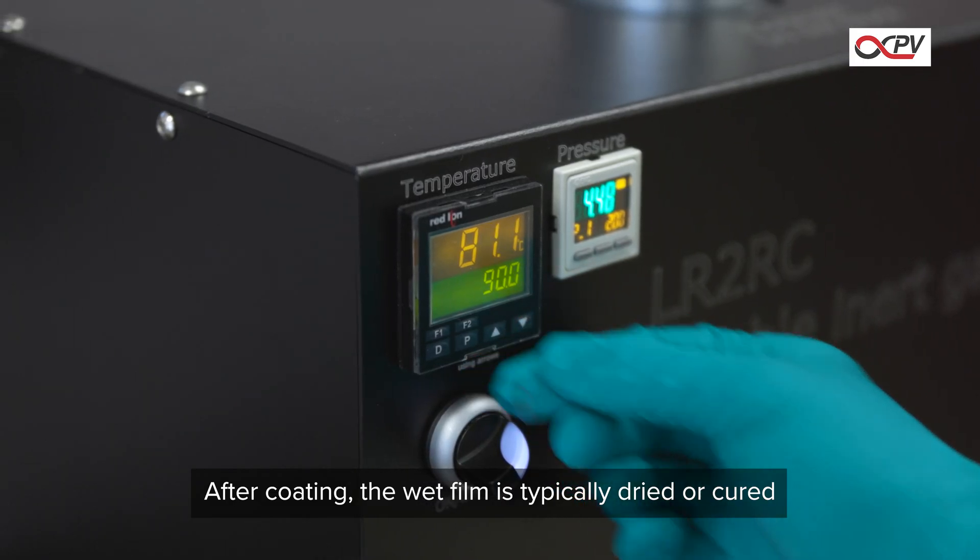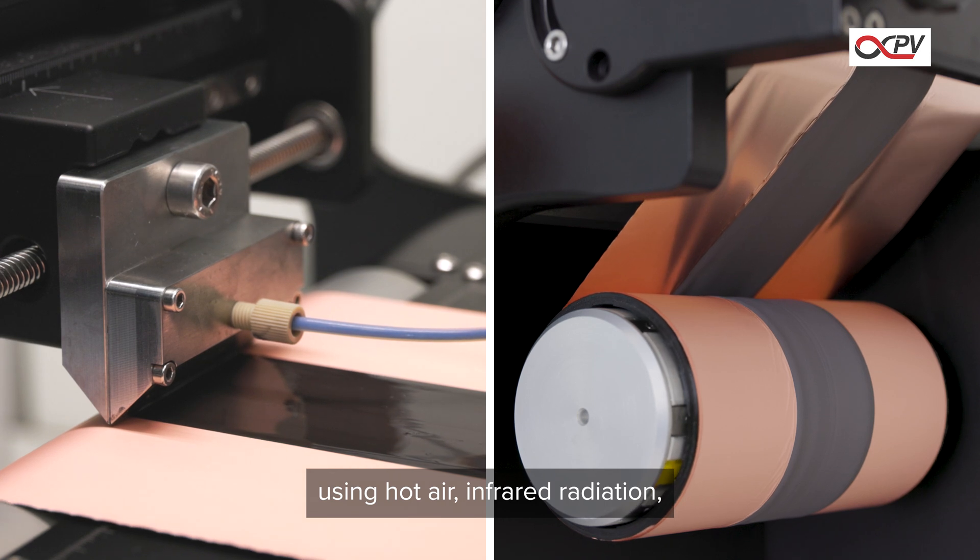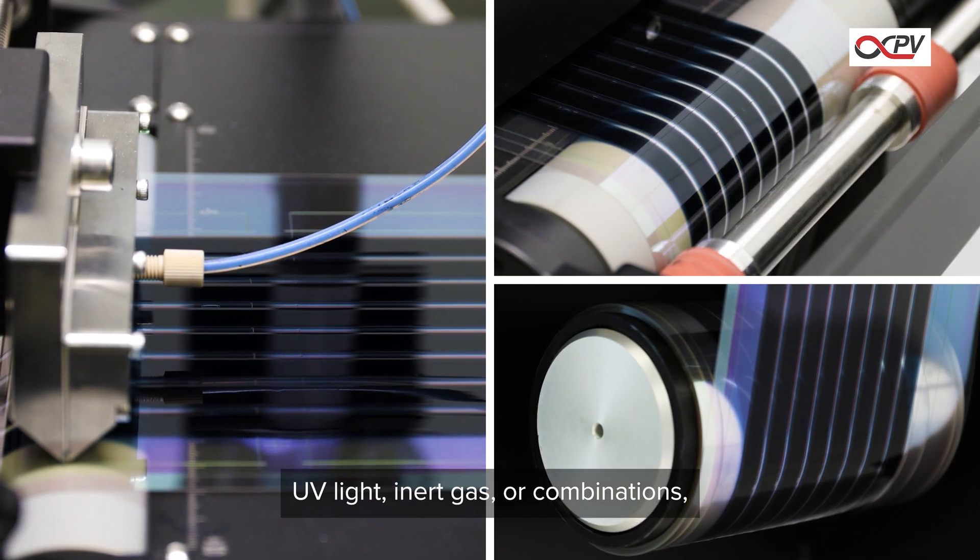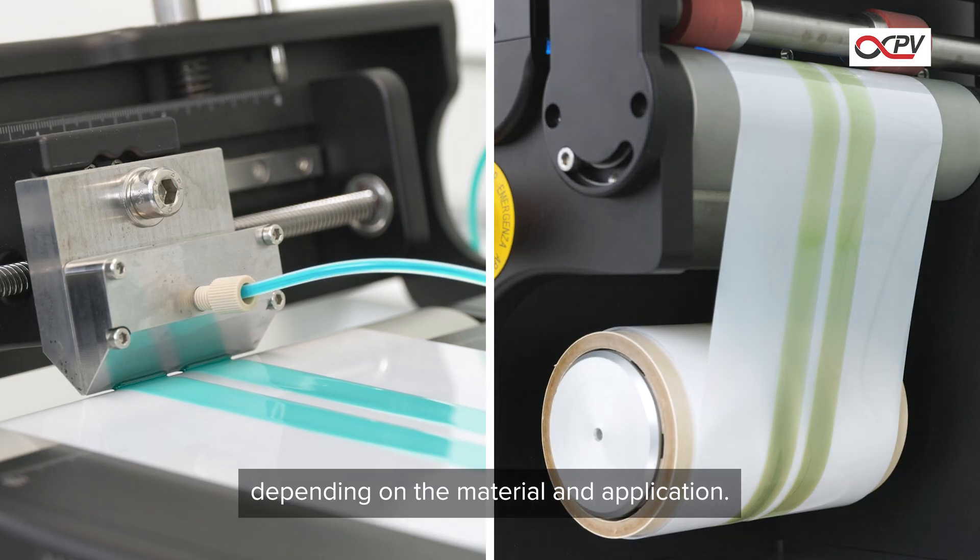After coating, the wet film is typically dried or cured using hot air, infrared radiation, UV light, inert gas, or combinations, depending on the material and application.